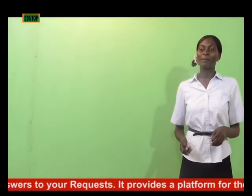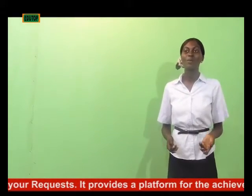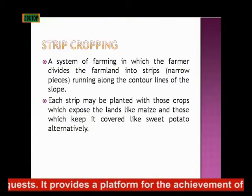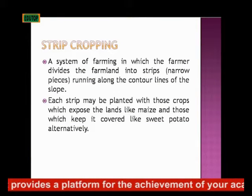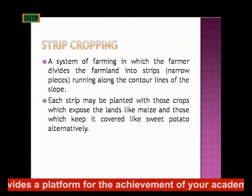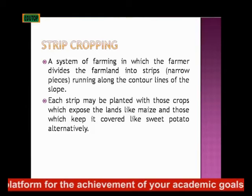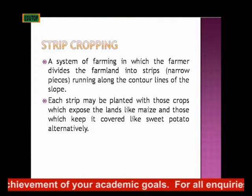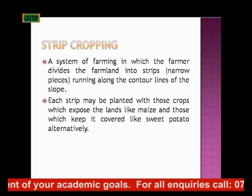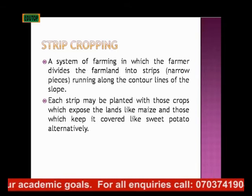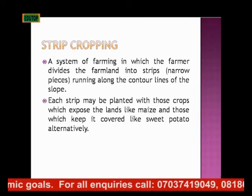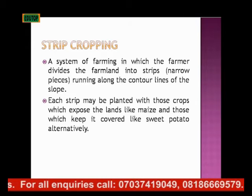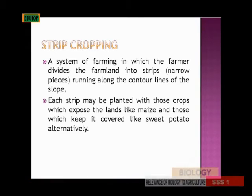The last type of farming I'll be talking about is strip cropping. In this type of farming, the farmer divides the land into strips — that is, into narrow pieces — running along the contour lines of the slope. It's done around sloped ground. Each strip will be planted with crops that expose the land, like maize, and it will also plant two types of crops on the strip.